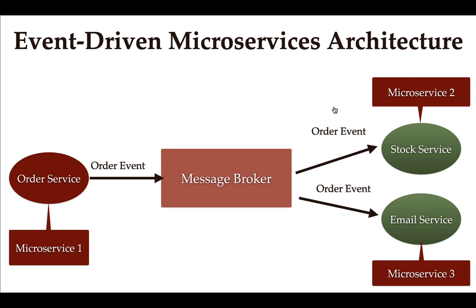For example, consider this event-driven microservice architecture. It has three microservices: order service, stock service, and email service. Whenever a customer places an order, a create event is generated and published to the message broker, and then stock service and email service consume that message from the message broker.